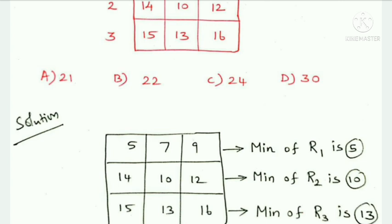The first row minimum number is 5. The second row minimum number is 10. The third row minimum number is 13. Subtract these minimums: first row subtracts 5, second row subtracts 10, third row subtracts 13.